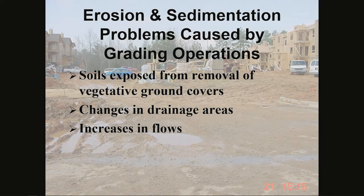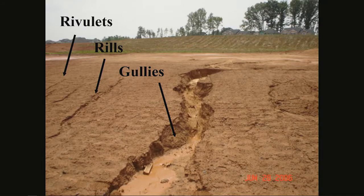Erosion and sediment problems caused by grading operations: when you grade a site, soils are exposed from the removal of vegetative ground cover, you change the drainage area, and you increase the flow of water over the site. The three steps in the erosion process we look for are rivulets — not too worrying, commonly occur after a small rain; then rills, which come up with longer duration or more intense rains; and then gullies, which we want to avoid. Should you get a gully on the backside of a basin, this could potentially cause a disaster if sediment gets into a protected area such as a wetland buffer or a stream.